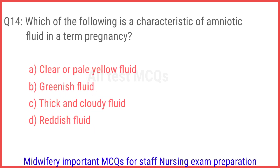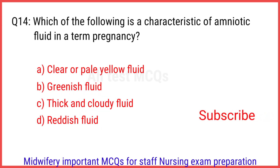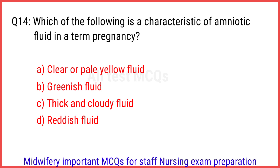Q14. Which of the following is a characteristic of amniotic fluid in a term pregnancy? The right answer is option A: Clear or pale yellow fluid.